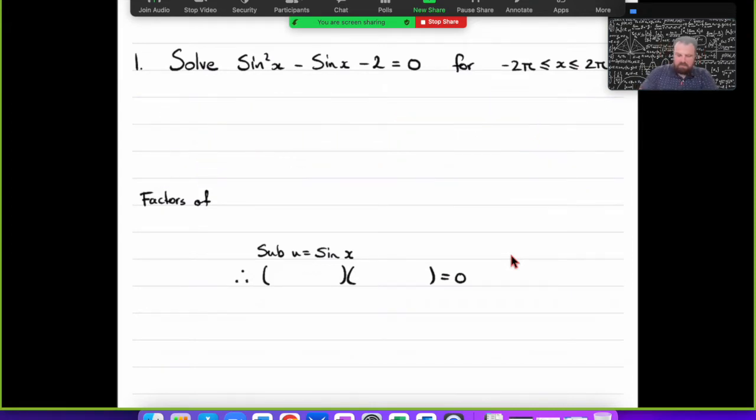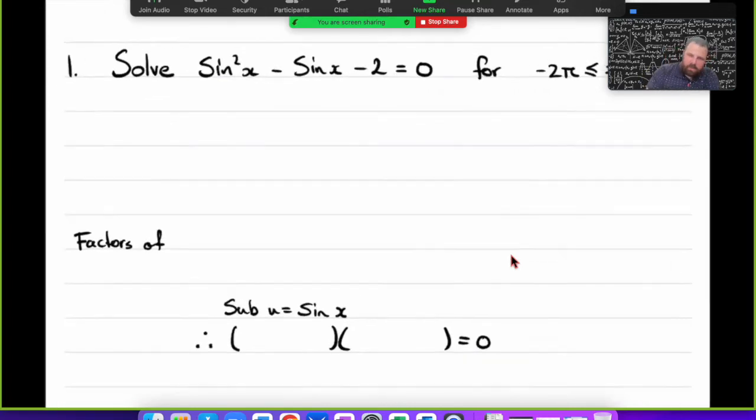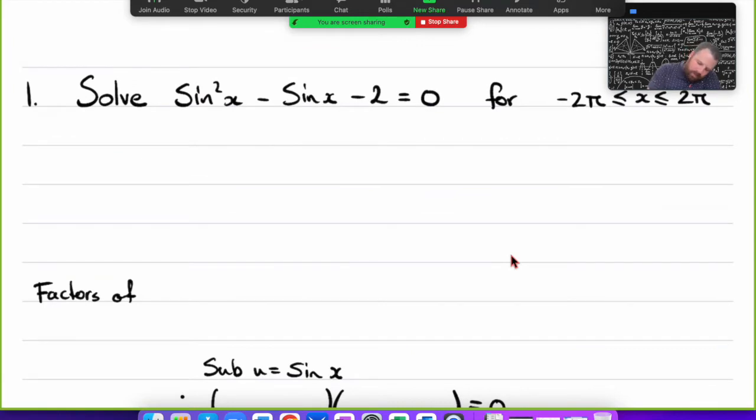When it comes to trig, it's the same thing. We can see we've got sin²x and sin x. There's no trig identities that are going to help us make this question easier. So I'm going to make a substitution. Let u = sin x.